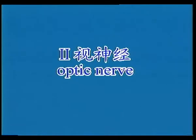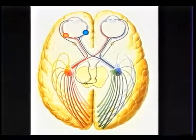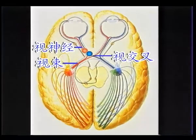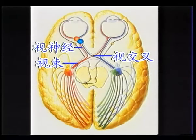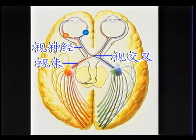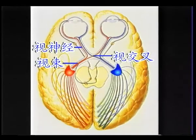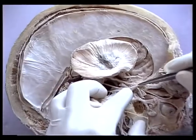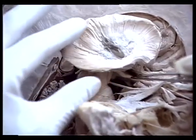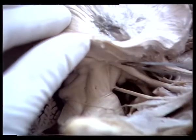二，视神经（Optic nerve）。视神经由特殊躯体感觉纤维组成，传导视觉冲动，由视网膜节细胞的轴突在视神经盘处汇聚，穿过巩膜而构成视神经。视神经在眶内向后内行，穿视神经管入颅中窝，连于视交叉，再经视束连于间脑。